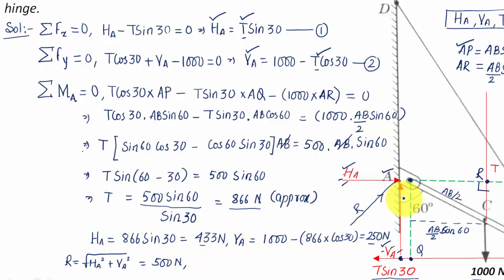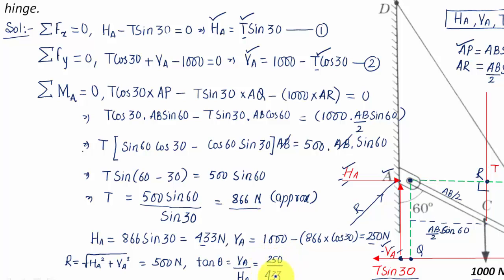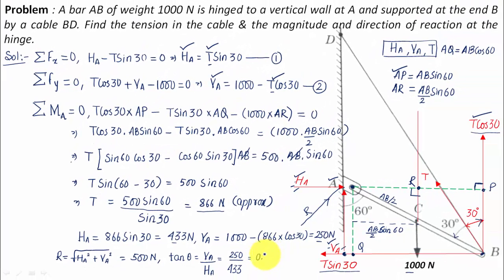To find the direction of the resultant, we use tan theta equals VA over HA equals 250 over 433, which equals approximately 0.577. Taking the inverse tangent, theta works out to 30 degrees. So the resultant reaction at the hinge is 500 Newtons acting at 30 degrees.